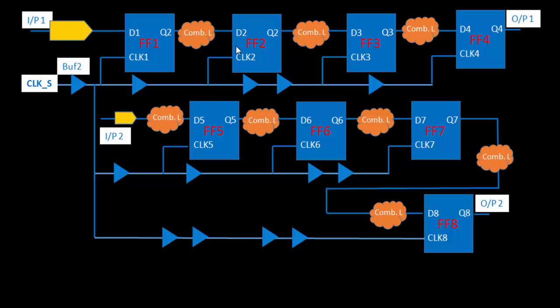When we constrain our design, we add a constraint in the timing report for the timing path. One of those constraints is skew — the skew between those two clocks, such as between CLK1 and CLK2, which are adjacent. But if someone in an interview asks you what the skew in your design is, they are talking about the global skew.